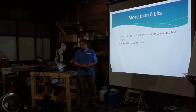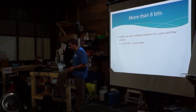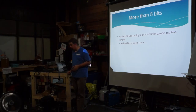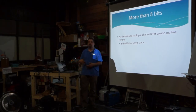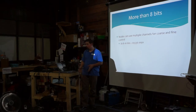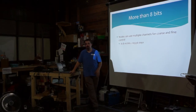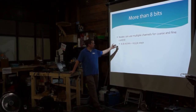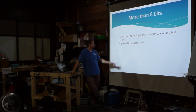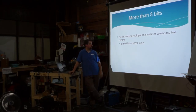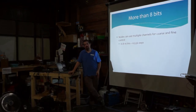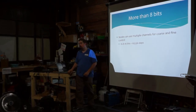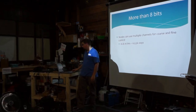If you want more than eight bits of resolution — such as some of the moving fixtures I have here that want more granular control — five degrees of movement isn't enough resolution. So what they do is use a fine and coarse control channel. When you add those two 8-bit channels together, you get 16 bits, giving you 65,536 steps — a lot more granular control for pan and tilt.